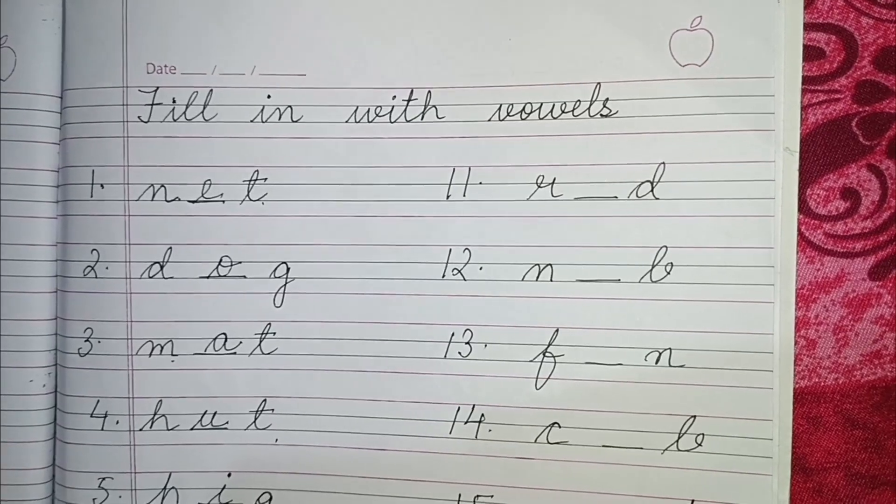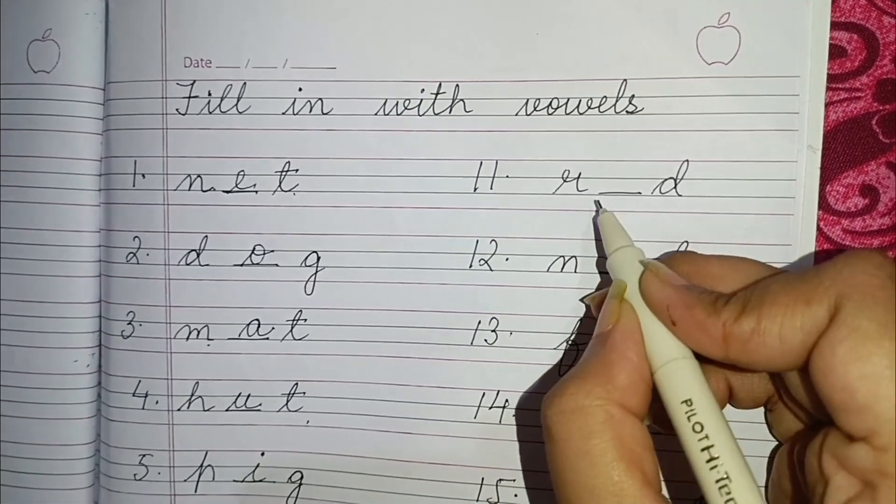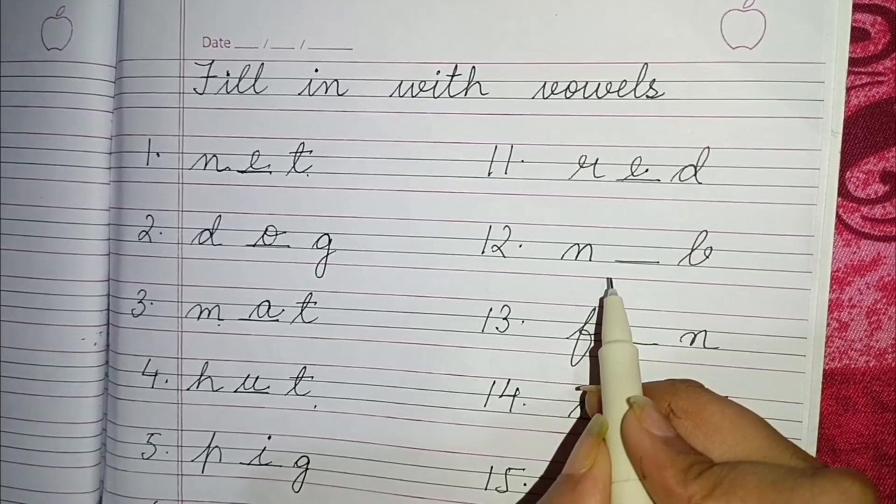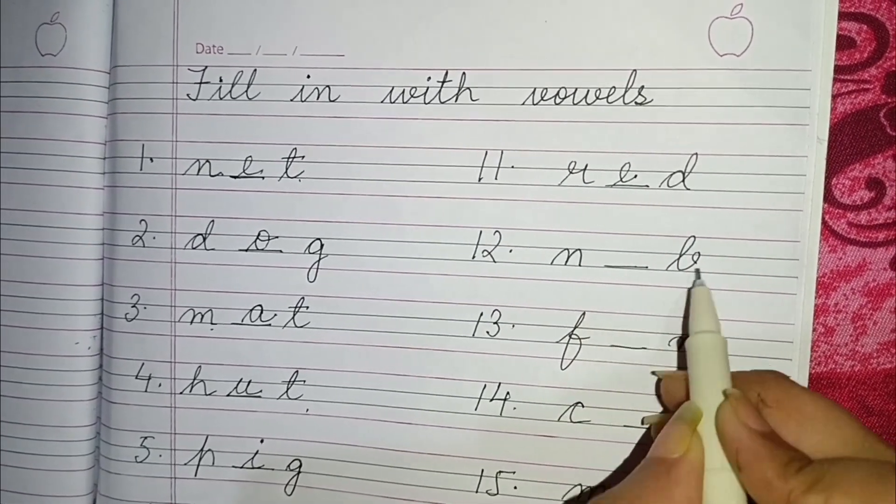Next is R dash D. So here it will be R E D, red. Next is N I B, nib.